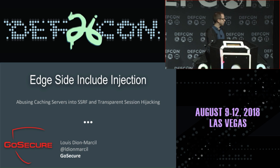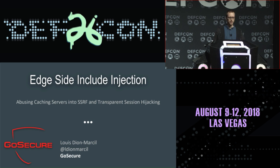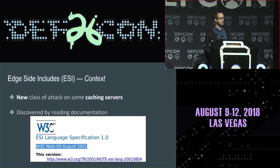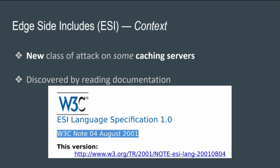My name is Louis Diomarsille. I work at GoSecure in Montreal. ESI injection is basically a new class of attacks targeting ESI-enabled caching servers. It's not a widespread attack, unlike what James Kettle presented at Black Hat two days ago — this is really targeting ESI engines.